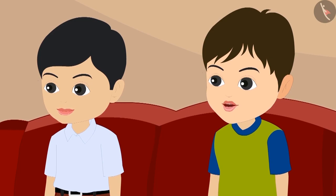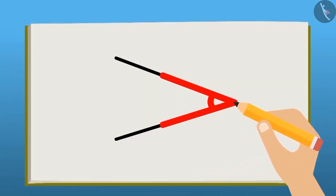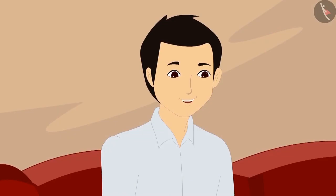But Dad, we had read that wherever there are two lines an angle is formed. No Bholu, just the presence of two lines does not form angles. Their meeting is also very important.